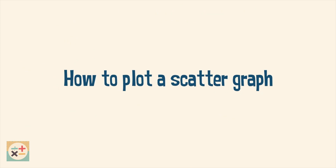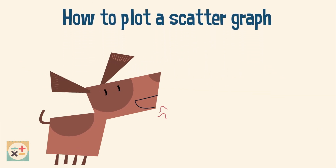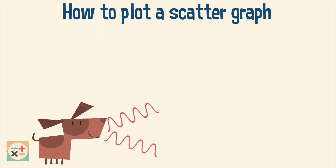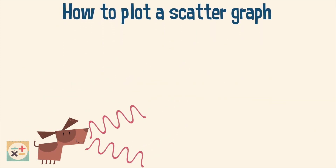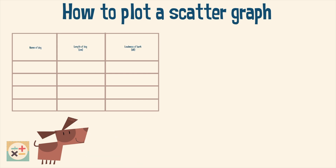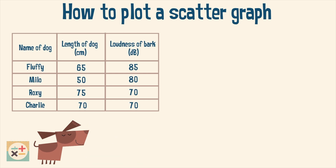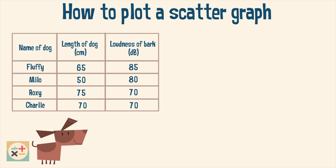So how do you plot a scatter graph? Have a look at this set of data. We are given values for the size of each dog in centimeters and the loudness of its bark in decibels.